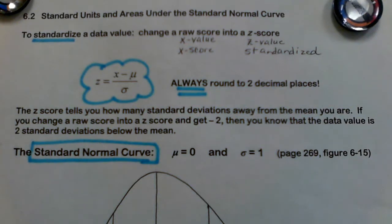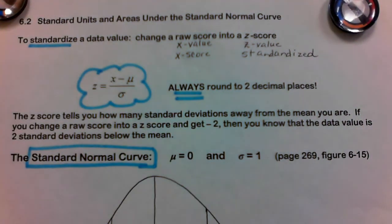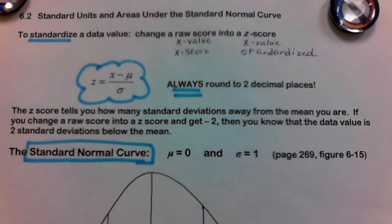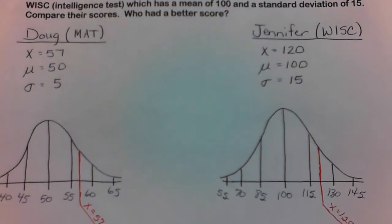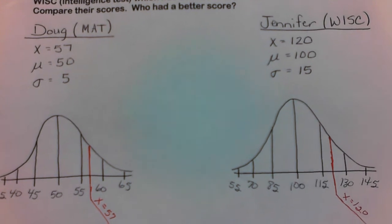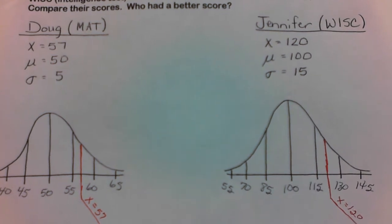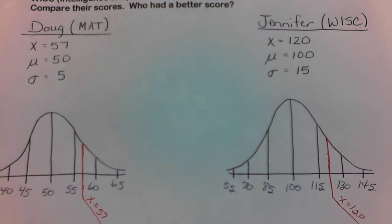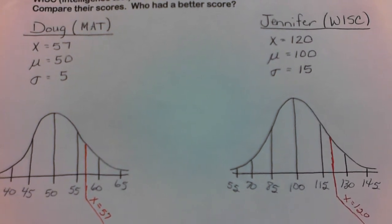Chapter 6.2. We're going to continue our discussion on normal distribution. A reminder that normal distribution comes from a symmetrical set of data. When we ended the last set of notes, we were comparing Doug's score on a particular test to Jennifer's score on a different test. The question was: who had a better score? We couldn't say with certainty because we're comparing two different tests with two different means and two different standard deviations.